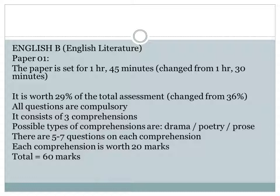English B, or Literature, Paper 1. The paper is set for 1 hour and 45 minutes, which has been changed significantly from the original 1 hour and 30 minutes. In earlier years there were short answers on Paper 1, but in this new format there are multiple choice questions instead. Paper 1 is worth 29% of the total assessment, changed from 36%. All questions are compulsory. It consists of three comprehensions — drama, poetry, and prose — with 5 to 7 questions on each comprehension. Each comprehension is worth 20 marks, giving a total of 60 marks.